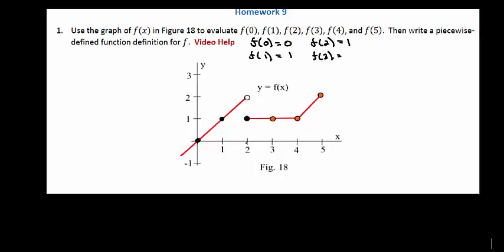F at 3. We go over to 3. Its height value is 1. F at 4. Its height value is 1. And last F at 5. Its height value is 2.